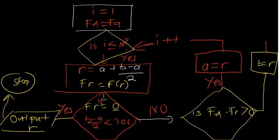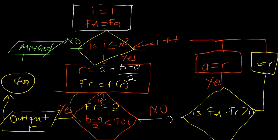What happens in a case where i is no longer less than or equal to n, but you've not satisfied the conditions here? What it would mean is the method has failed. So if it says no, then just output method failed or method failure, because the maximum number of iterations have been used up.